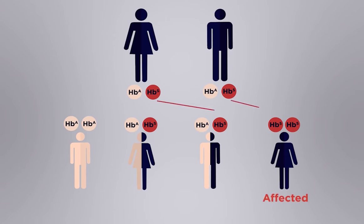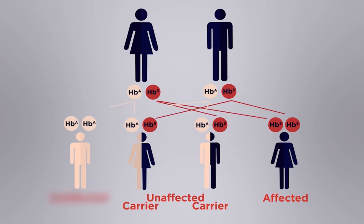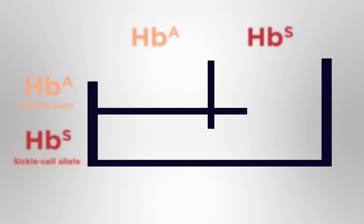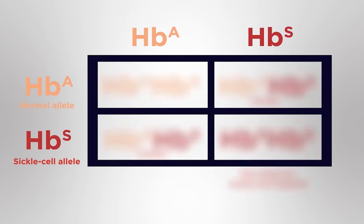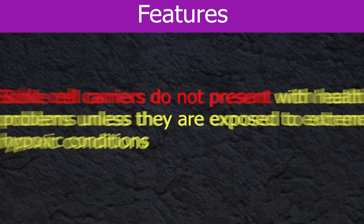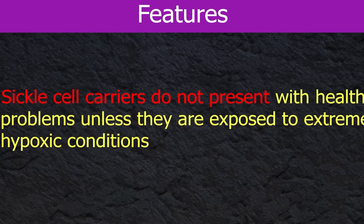If a person receives the mutation from only one parent, they will have just enough healthy red blood cells needed for normal circulation. These people are called sickle cell carriers. But if both genes are mutated, they can get full-blown disease features. Sickle cell carriers do not present with health problems unless exposed to extreme hypoxic conditions.